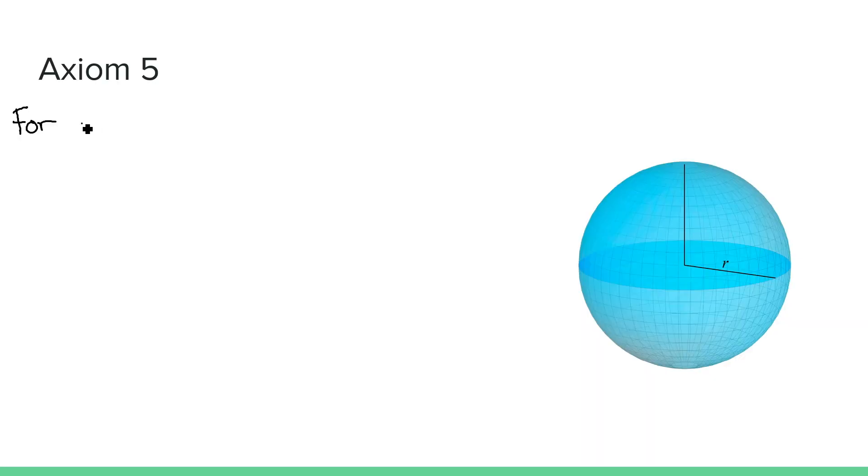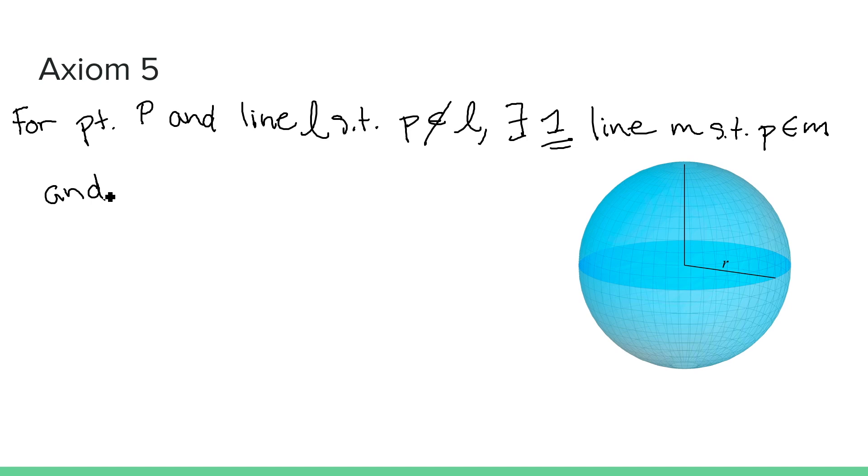The other Euclidean axiom to consider is Euclid's fifth axiom, which states, for a point P and a line L such that P is not on L, there exists one and only one line M such that P is on M and M is parallel to L. Since spherical geometry is described in terms of great circles, this axiom can't hold.